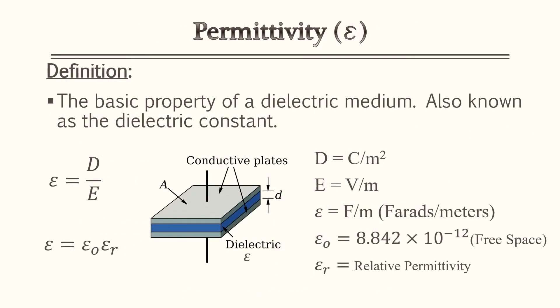Now for the main topic of this lesson: permittivity. What is permittivity? It's the basic property of the dielectric medium, also known as the dielectric constant. If you look at the illustration, there are two conductive plates with a blue area in between them — that blue area is your medium. That medium could be free air, plastic, wood, or even rock, depending on the particular problem.